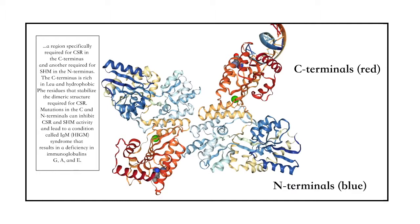The C-terminus is rich in leucine and hydrophobic phenylalanine residues that stabilize the dimeric structure required for CSR. Mutations in the C- and N-terminus can inhibit CSR and SHM activity and lead to a condition called hyper-IgM syndrome that results in a deficiency in immunoglobulins IgA and IgE.